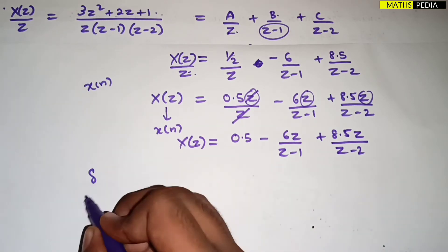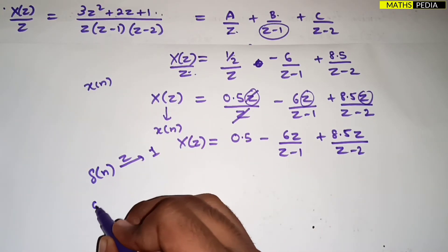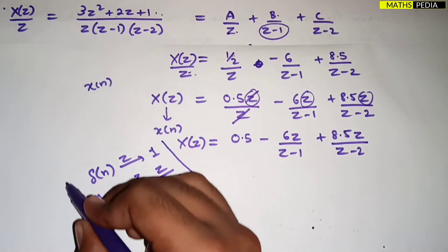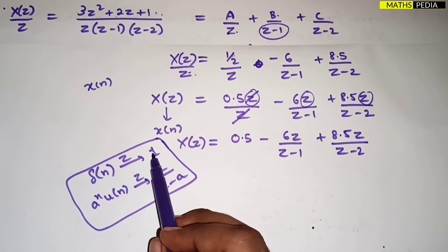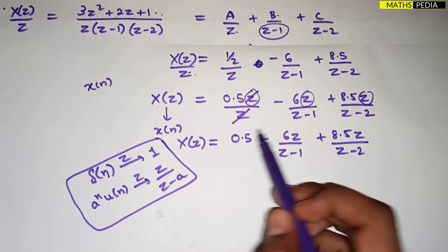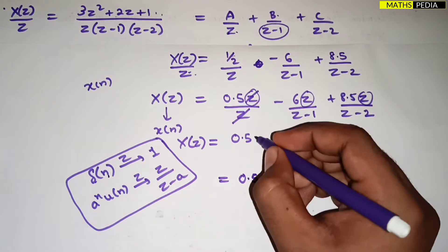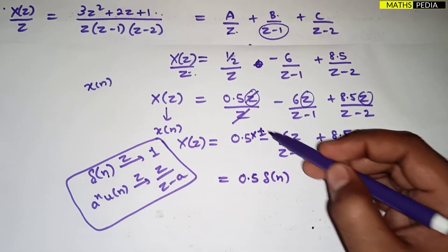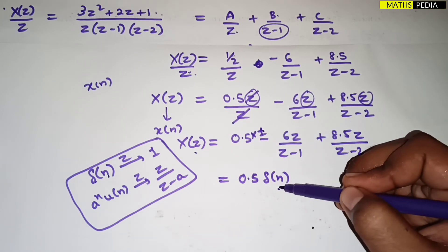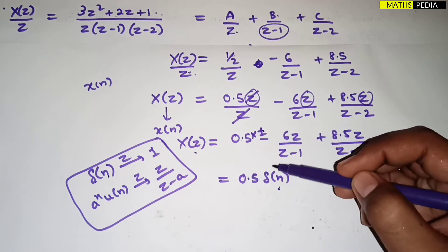To find x(n) from X(z), remember these formulas: the z-transform of δ(n) is 1, and the z-transform of a^n·u(n) is z/(z − a). So the inverse z-transform of 1 is δ(n). Here we have a constant term 0.5, so the inverse z-transform of that constant is 0.5·δ(n). Whenever you get a constant term, always write it as that constant times δ(n).